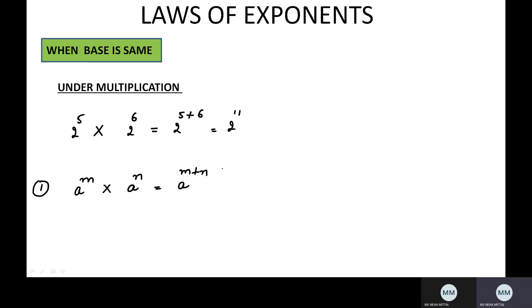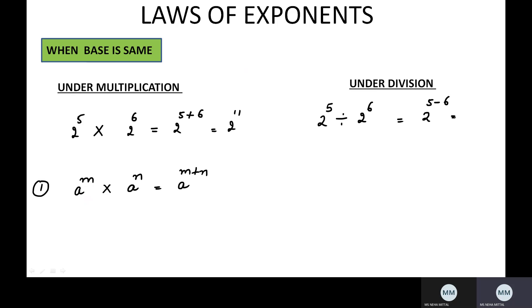Now let's see what happens in the case of division. If I have to divide 2 raised to the power 5 by 2 raised to the power 6 — the base is again same, but instead of multiplication we have division. So the rule is we have to subtract the powers: 5 minus 6, which gives 2 raised to the power minus 1.